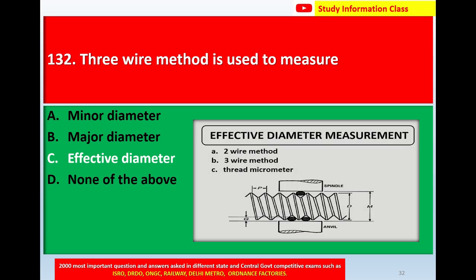This is the diagram of effective diameter measurement. The three measurement methods shown are: option A first two-wire method, option B three-wire method, and option C thread micrometers. For question 132, the correct answer is option C: effective diameter.